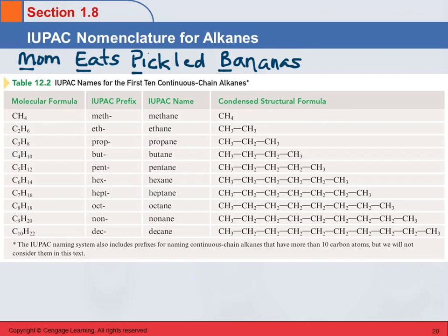After butane, we use Greek numerical prefixes from general chemistry. Pentane means five carbons, hexane means six — hex means six. Then heptane, octane, nonane, decane. There are names for larger chains too, but we rarely go past ten in this class.